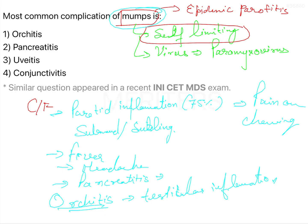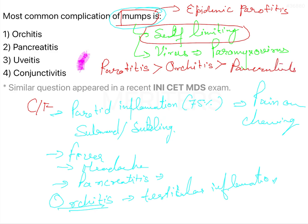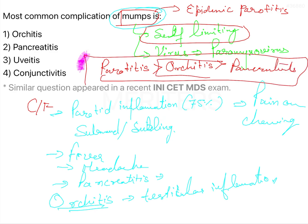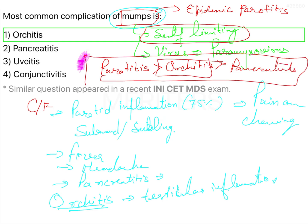To remember the order of frequency: parotitis is most common, followed by orchitis, and then pancreatitis and other complications. Therefore, orchitis is the correct answer — option one.